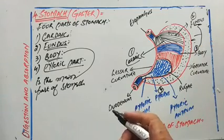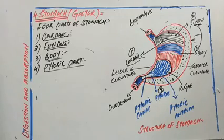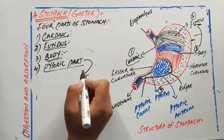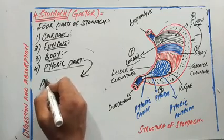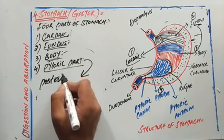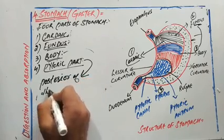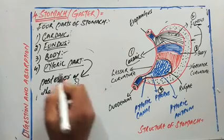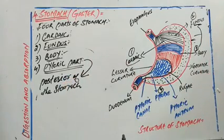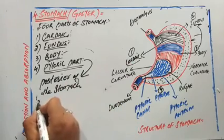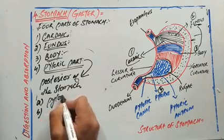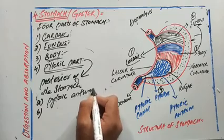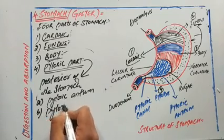The fourth part of the stomach is the pyloric part, which lies on the posterior side of the stomach near the greater curvature. It gets divided into two parts: the first one is called the pyloric antrum, and the second one is the pyloric canal.